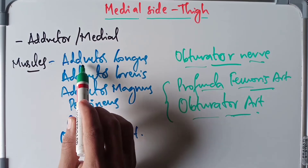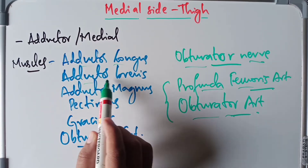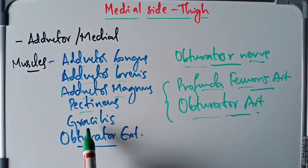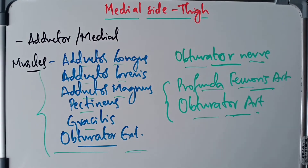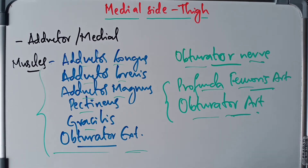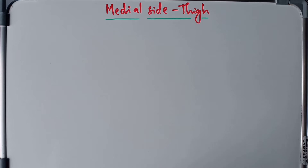So to summarize, the muscles of the medial side of the thigh are adductor longus, adductor brevis, adductor magnus, pectineus, gracilis, and obturator externus. This was a basic introduction; we will now continue with the origin, insertion, nerve supply, and actions of all these muscles, so stick to the video till the end.